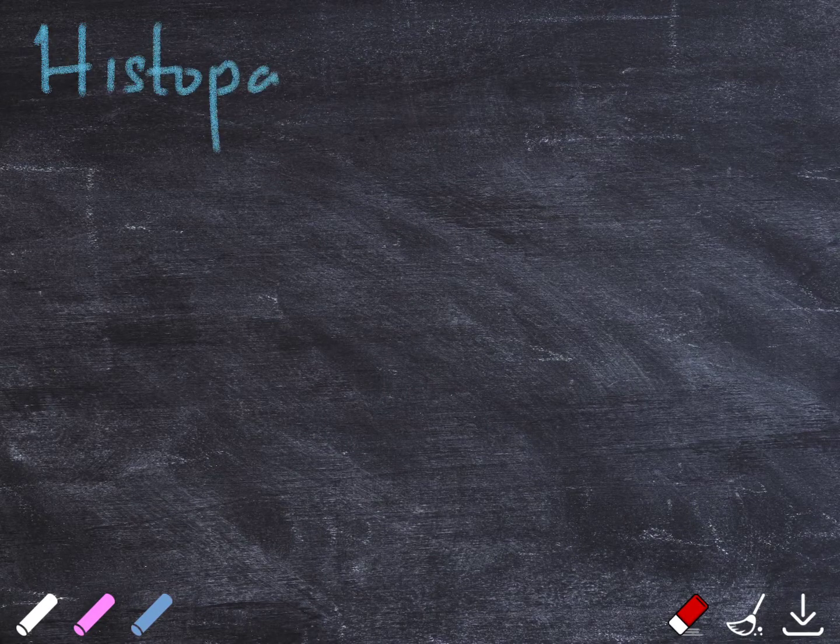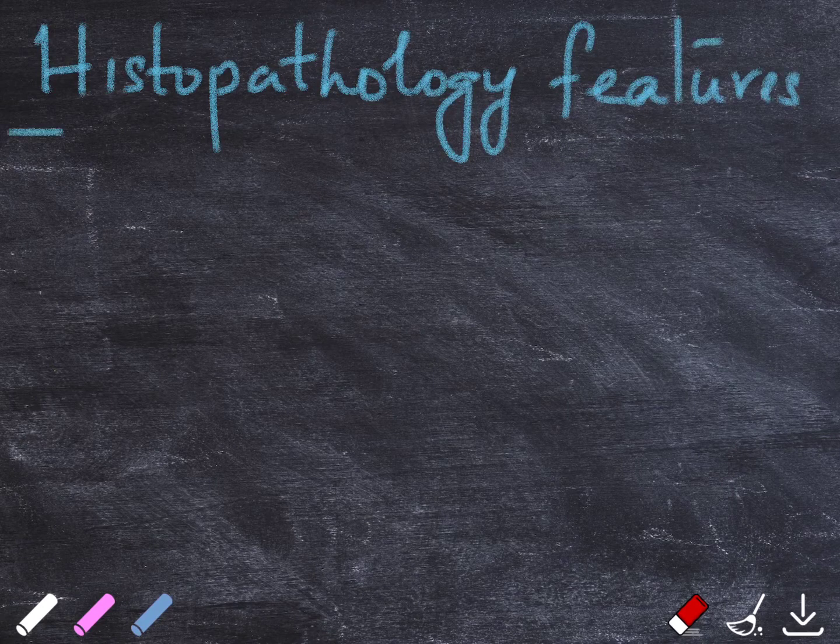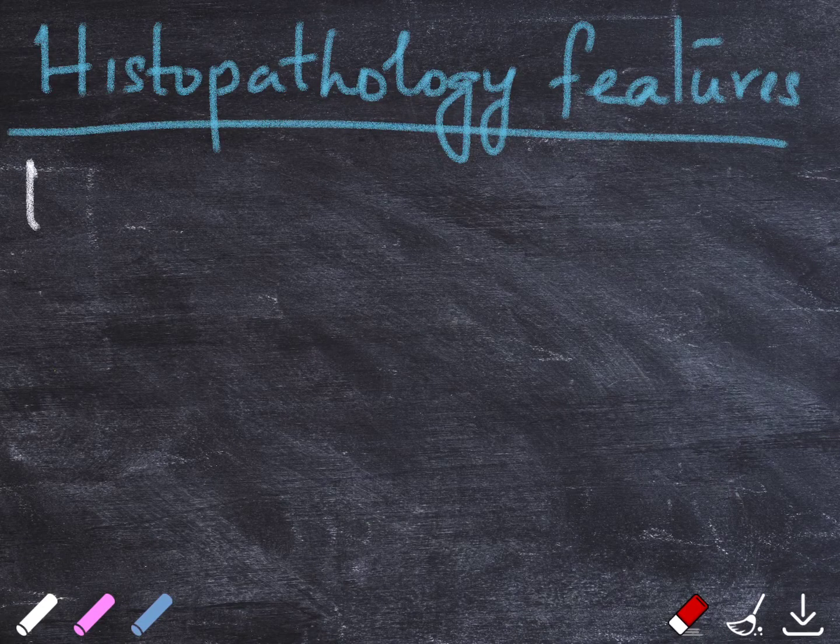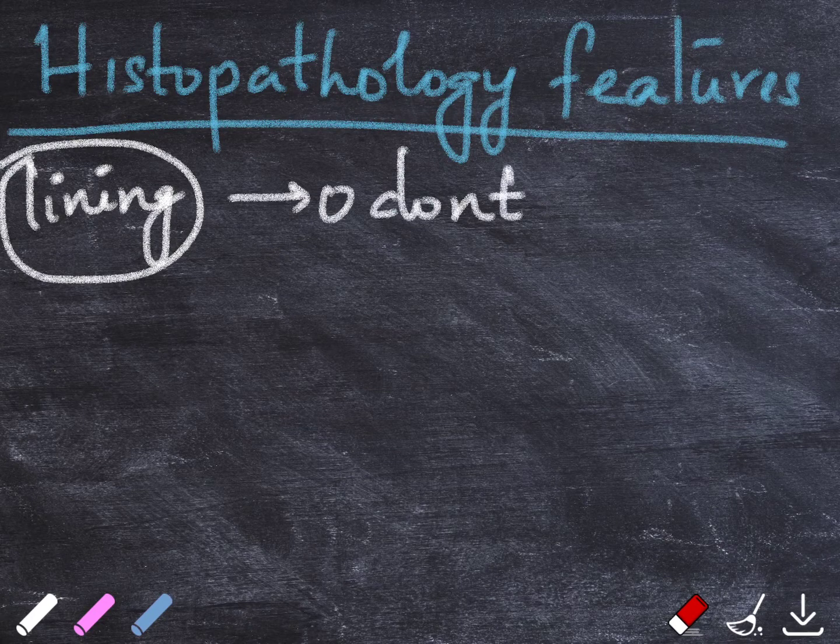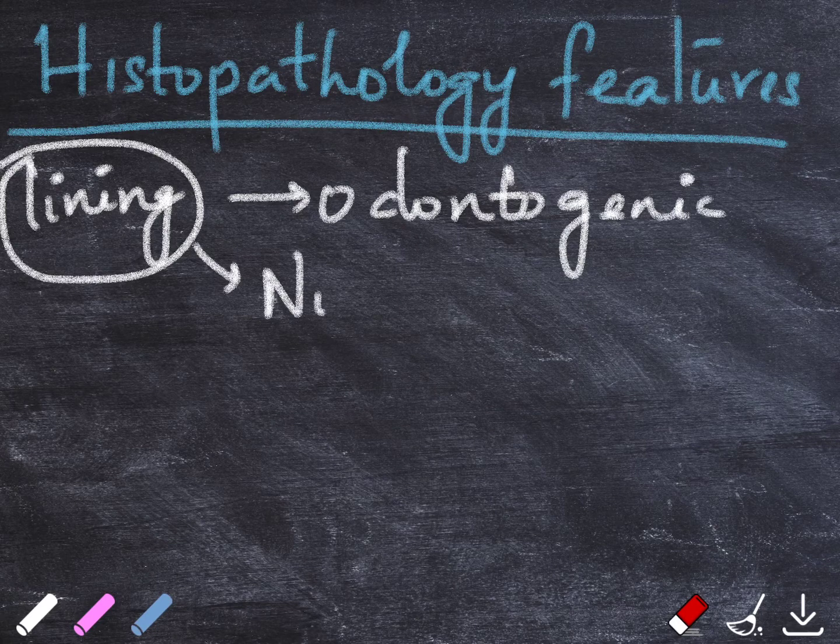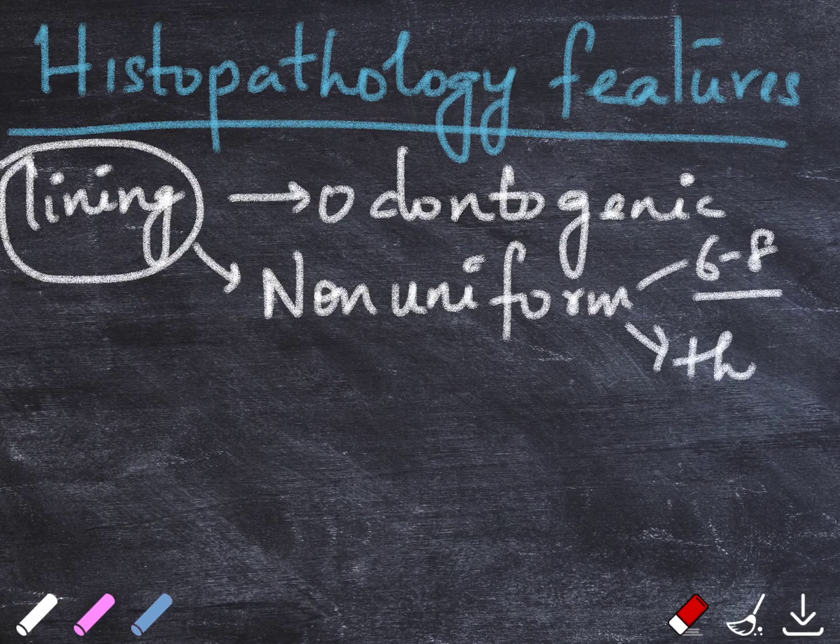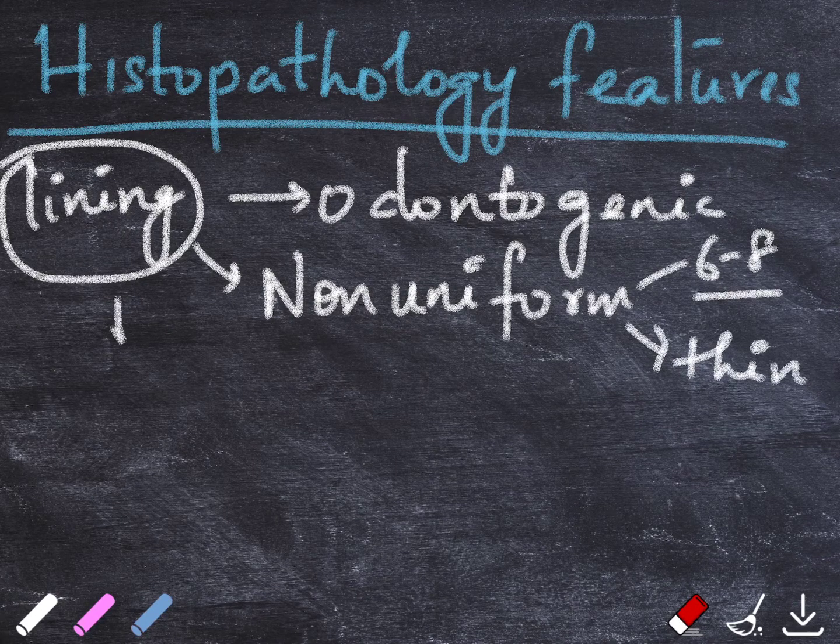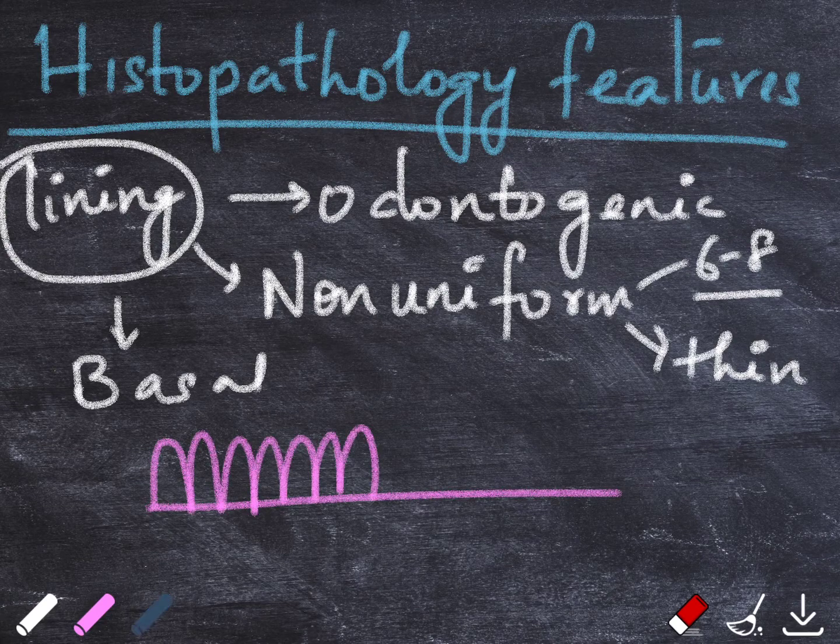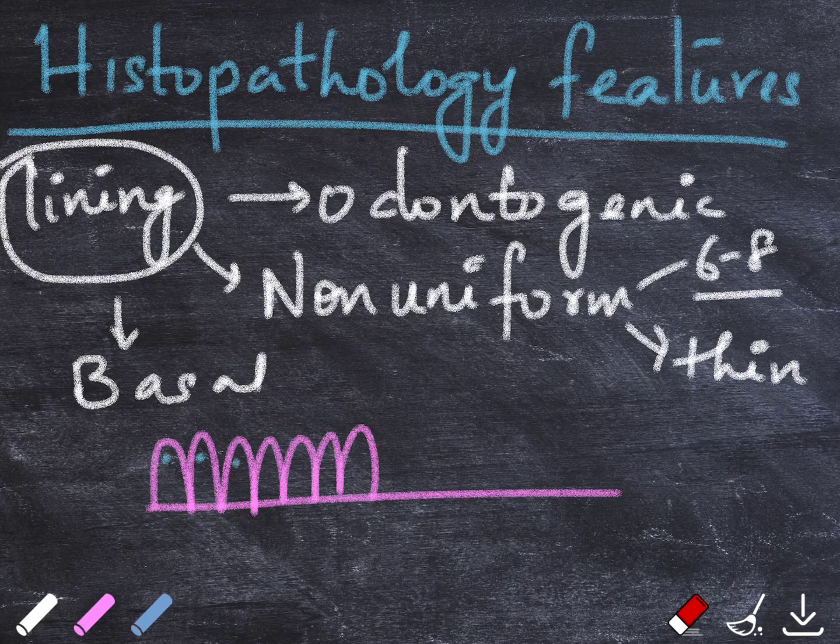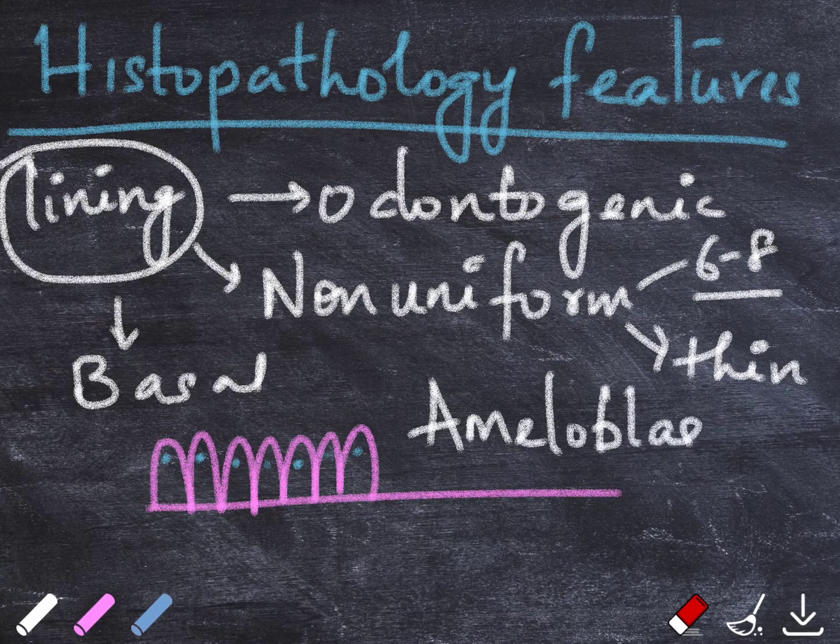Let's talk about the histopathological or microscopic aspects of COC. The lining epithelium of COC will have a characteristic feature of an odontogenic epithelium. The thickness is non-uniform having six to eight layer thickness in one area and being very thin in the other. The basal layer is fairly prominent being made up of columnar cuboidal cells with a hyperchromatic prominent palisaded nucleus polarized away from basement membrane resembling that of an ameloblast.